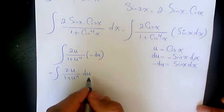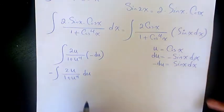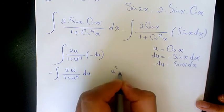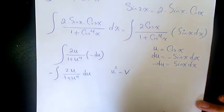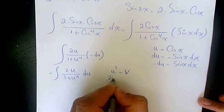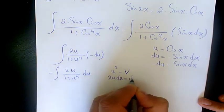And then, after that, let's say u squared equals v. When you find the derivative it's going to be 2u du equals dv.